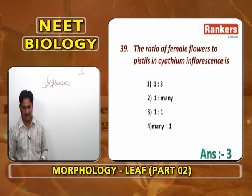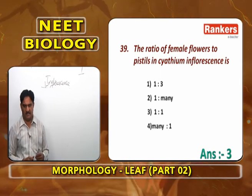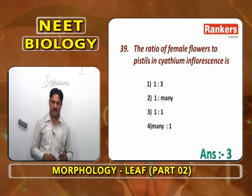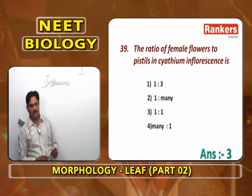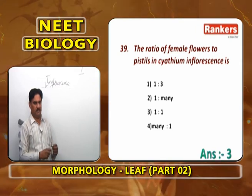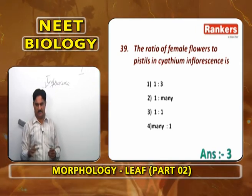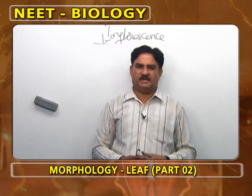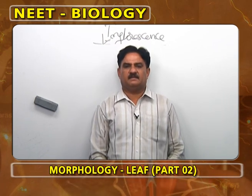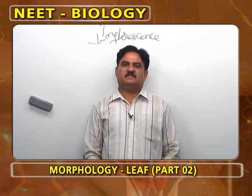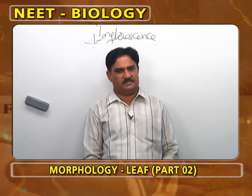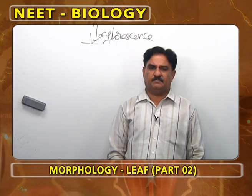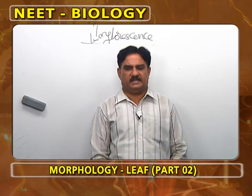Summary of inflorescence types: Racimose with pedicellate flowers — simple raceme, compound raceme, simple corymb, compound corymb, simple umbel, compound umbel. Racimose with sessile flowers — simple spike, catkin, simple spadix, compound spadix, head (homogamous and heterogamous). Cymose inflorescence — solitary cyme, simple cyme, monocasial helicoid cyme, monocasial scorpioid cyme, dichasial cyme, polycasial cyme. Special inflorescences — cyatheum, verticeloster, hypanthodium.